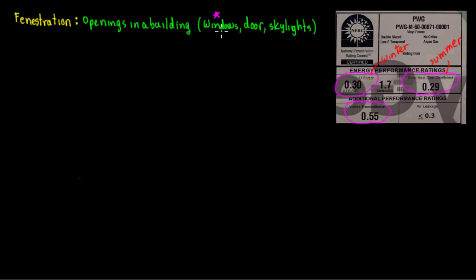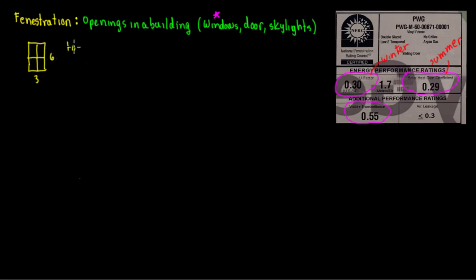So if we're talking about windows, let's put a window right here — say three by six. When you have a window like that, you're always going to have a label on the window. That label has to be NFRC rated.